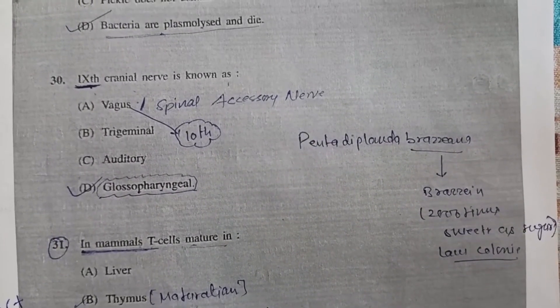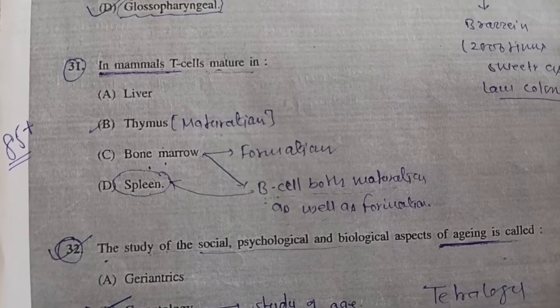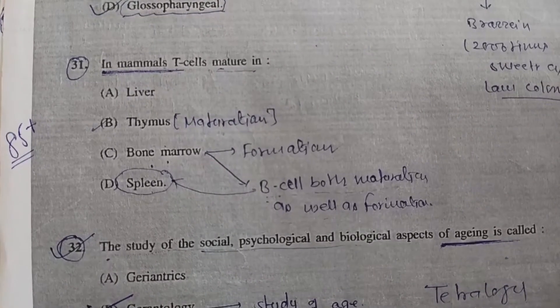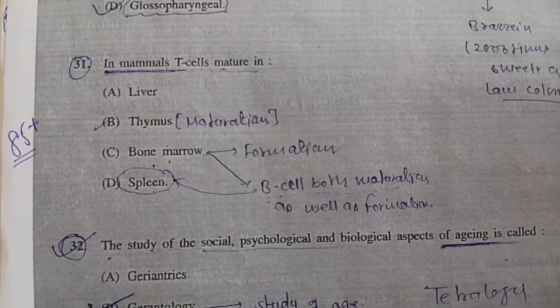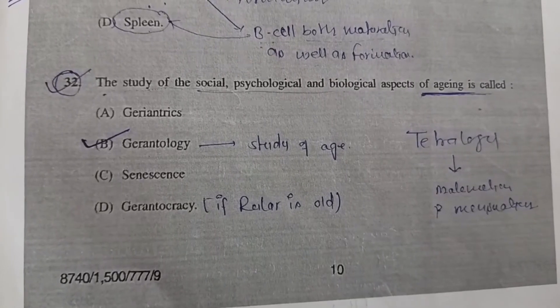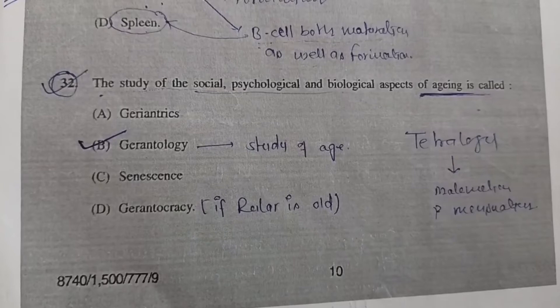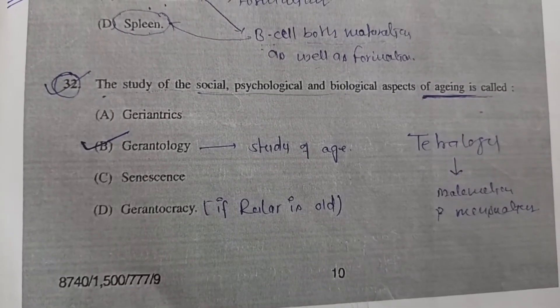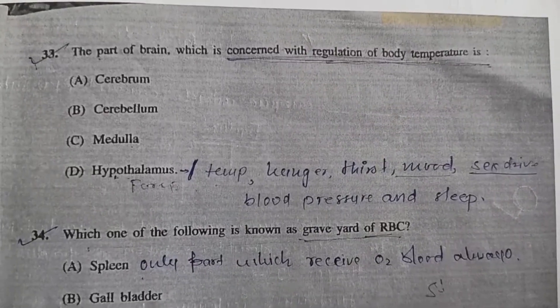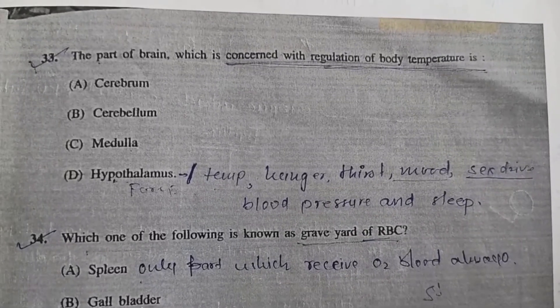Question 31: In mammals, T cells mature in - Option B, thymus. Question 32: The study of social, psychological, and biological aspects of aging is called - B, gerontology.